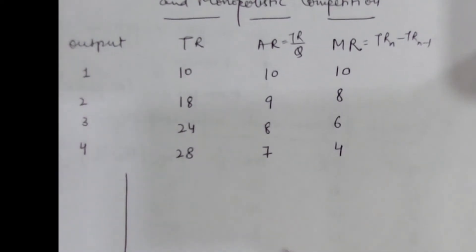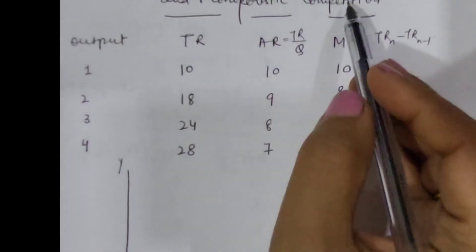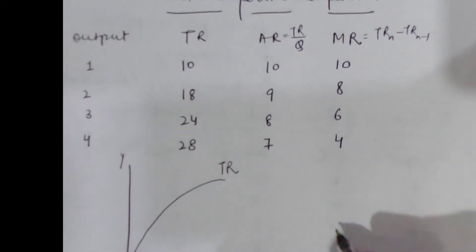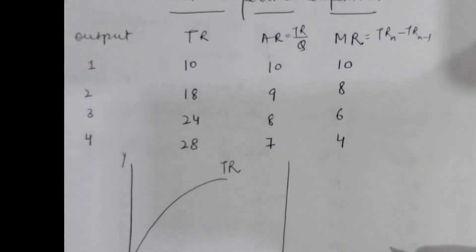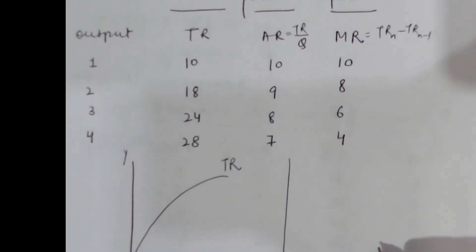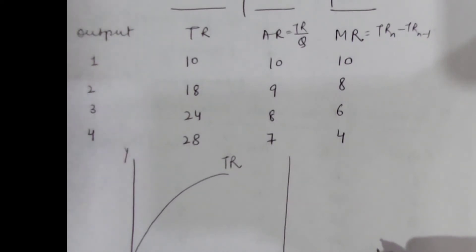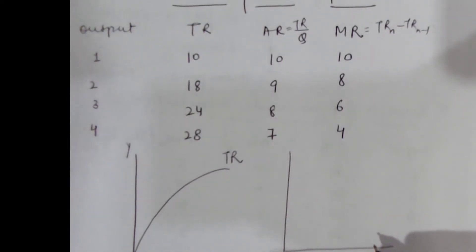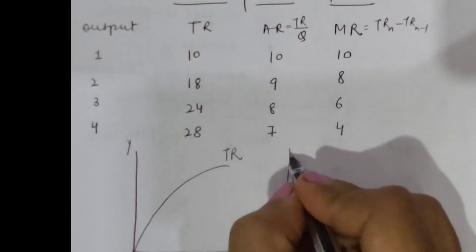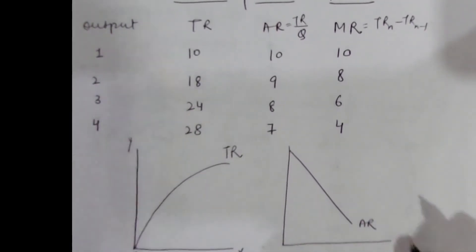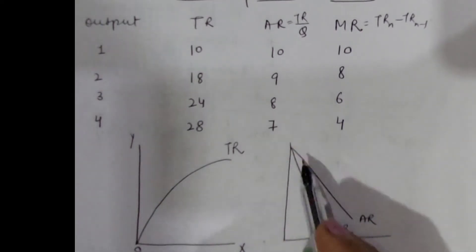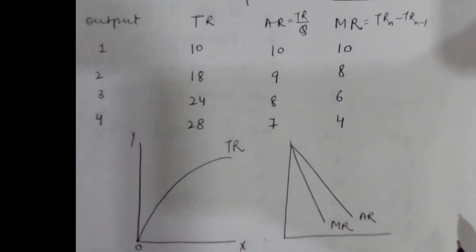Diagrammatically, we can show the behavior of total revenue under monopoly and monopolistic competition: total revenue is increasing but at a decreasing rate. When it comes to average revenue and marginal revenue, average revenue is decreasing at a decreasing rate. MR is always less than AR, and MR declines faster than AR. The average revenue curve shows a decreasing trend, and marginal revenue is to the left of and below the average revenue curve.